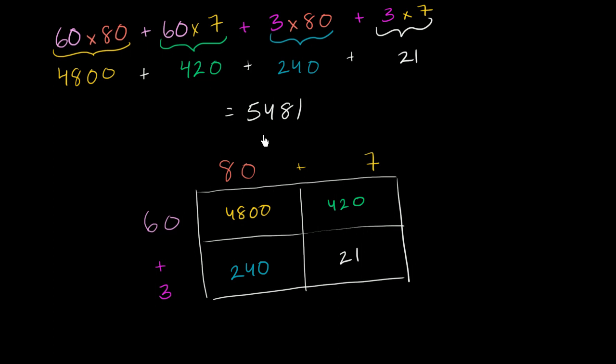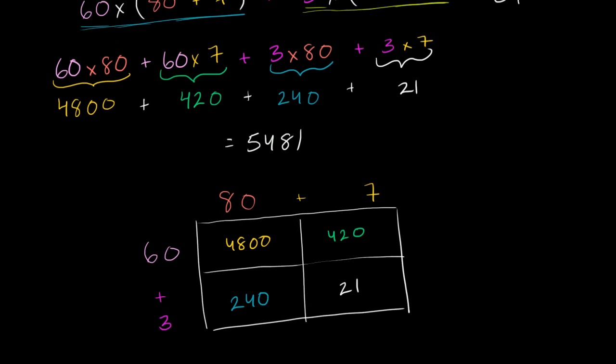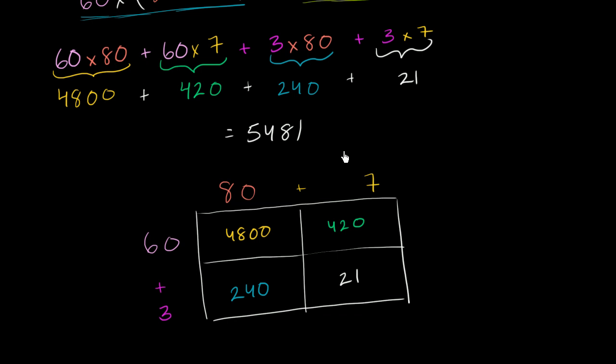And I encourage you to now just do the same multiplication problem, the same 87 times 63, the way that you might have traditionally learned it. And see and look at the different steps and why they are making sense. And why, at the end of the day, you really are doing the same thing that we just did in this video. You're just doing it in a different way. And the whole point of this whole exercise is so that you're not just blindly doing some type of steps to find the product of two numbers, but you can actually understand why those steps work and how those numbers relate to each other.